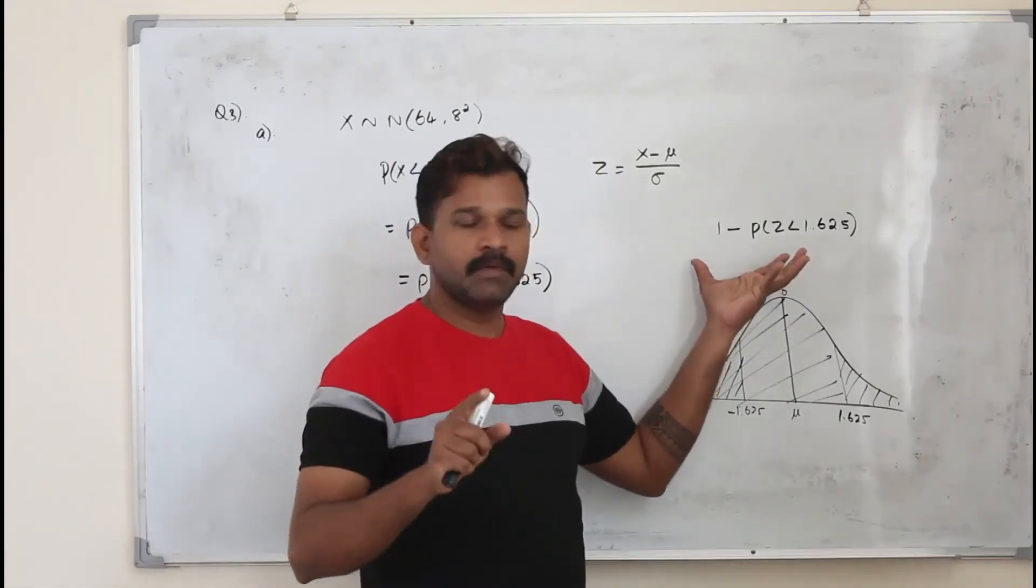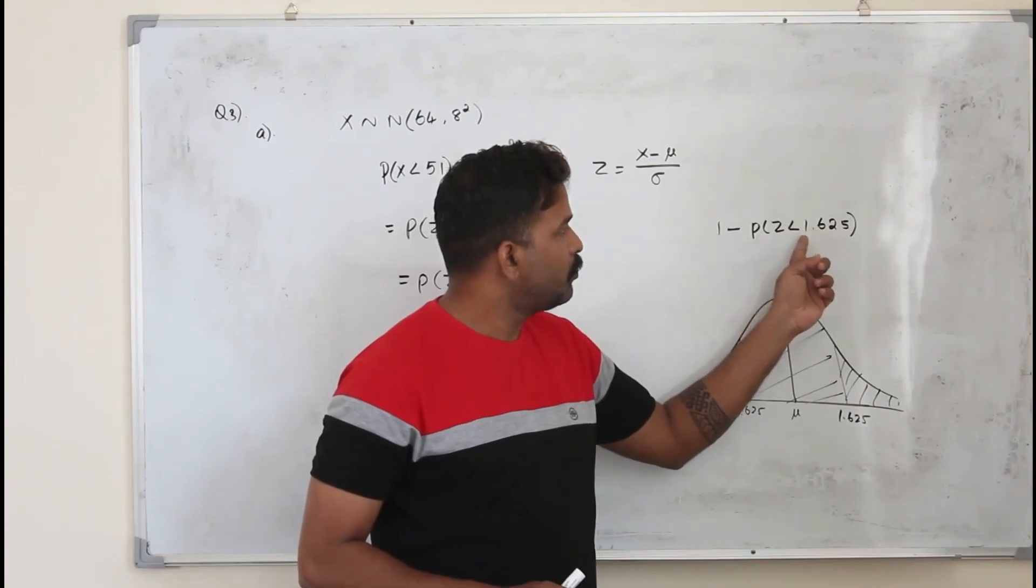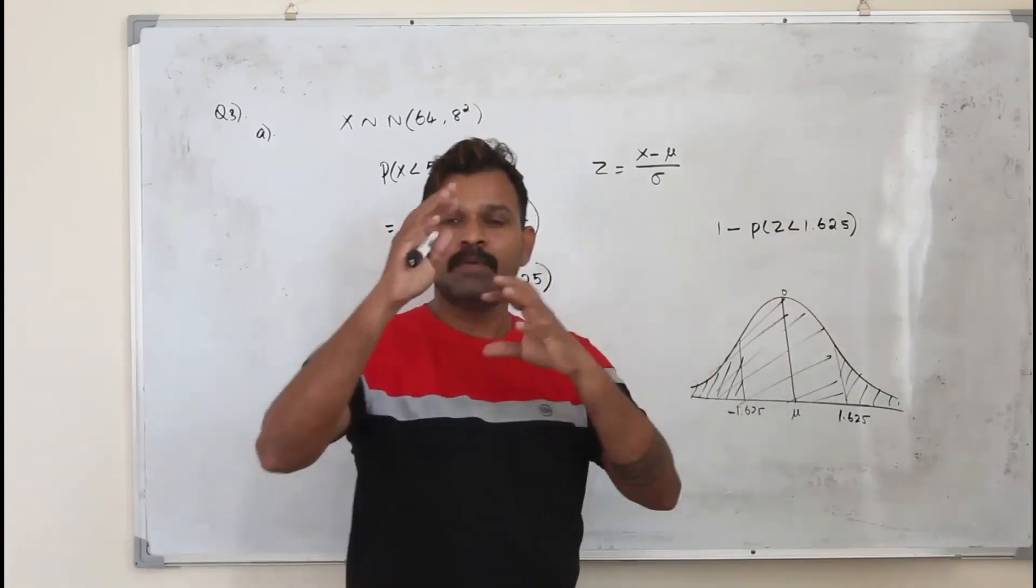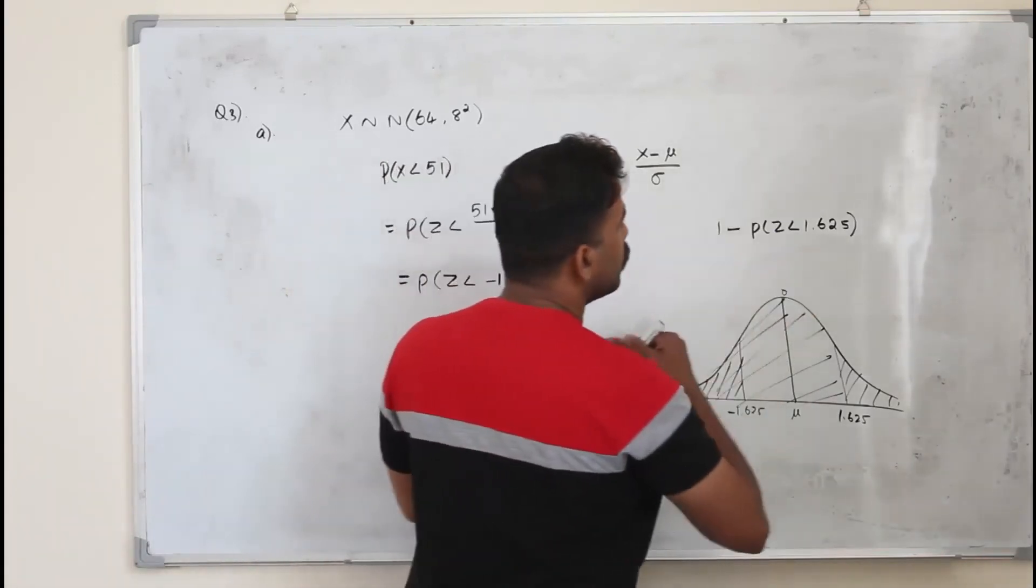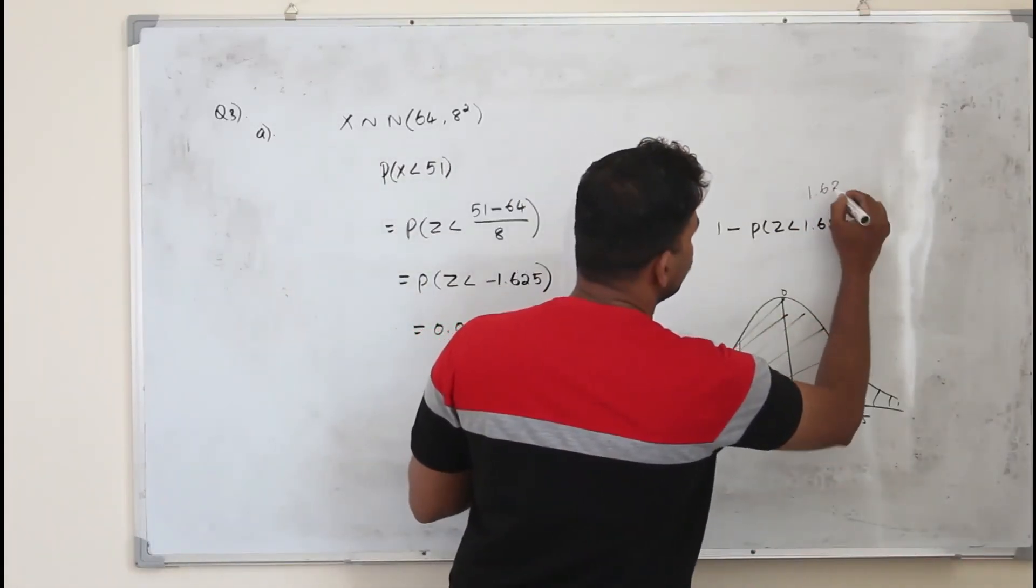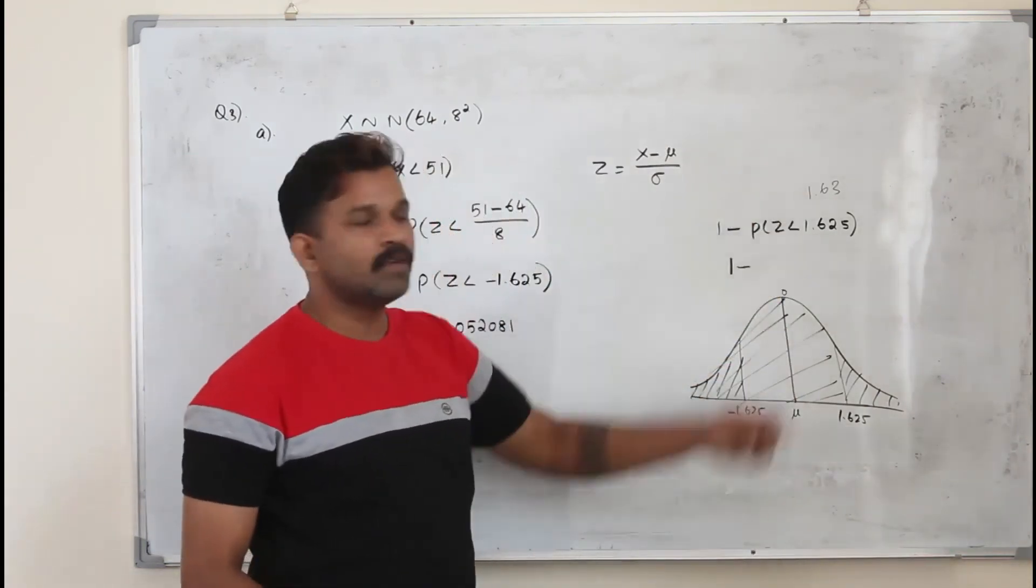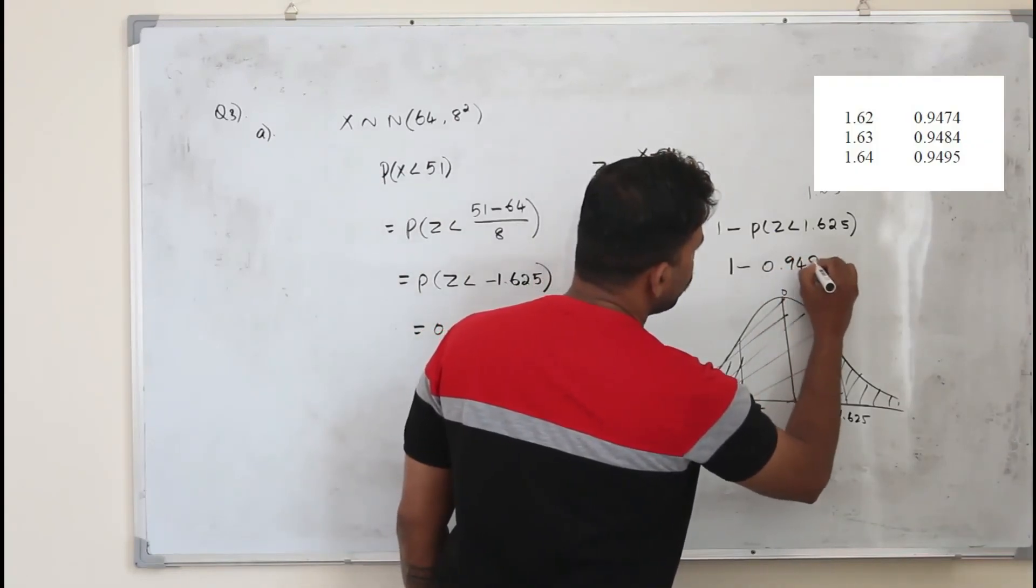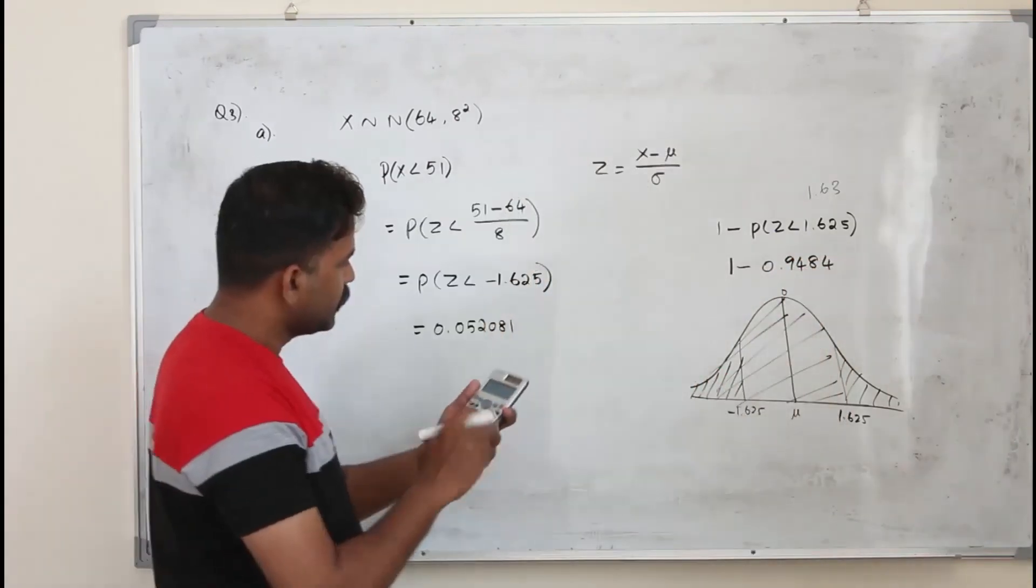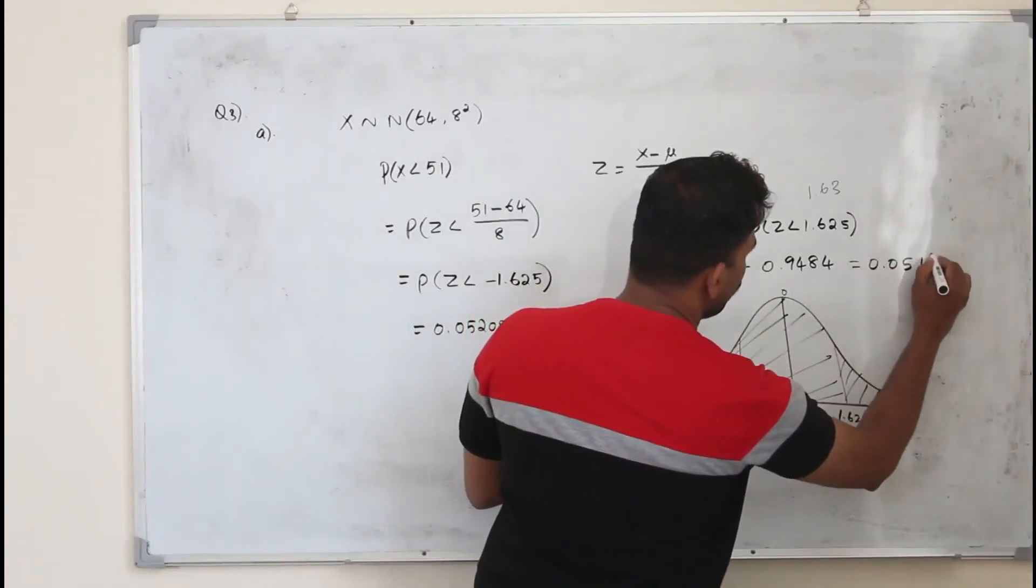So I am looking at the table now. And instead of 1.625, the table has only 2 values, 2 decimal places. So I am going to look for 1.60. So 1 minus P of Z less than 1.63. I get 0.9484. The answer here is 0.0516.